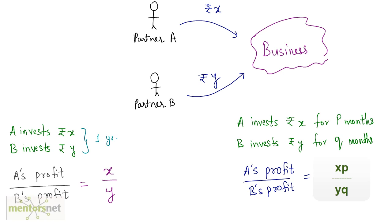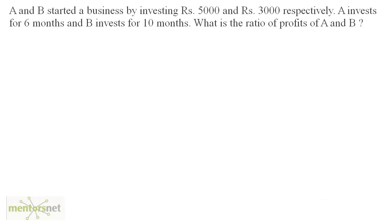So these are the basic formulas related to partnership. Let us solve a problem now. The question is: A and B started a business by investing five thousand and three thousand rupees respectively. A invests for six months and B invests for ten months. What is the ratio of profits of A and B?